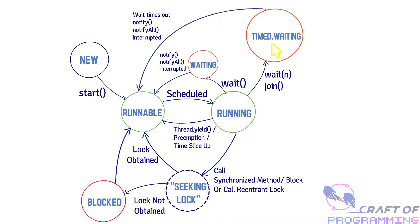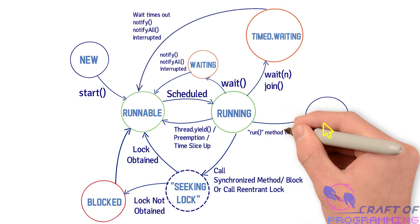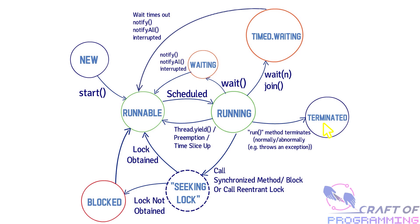The thread may also be signaled via notify() or notifyAll() while in the timed waiting state, in which case it's moved back to the runnable state. Just like the waiting state, while on the timed waiting state the thread may be interrupted, in which case it again moves to the runnable state. Finally, while the thread is running, its method may throw an exception, in which case the thread is terminated, or the thread's run method may end normally, in which case the thread is also terminated. Terminated is a terminal state from which there is no recovery.